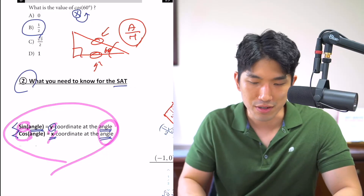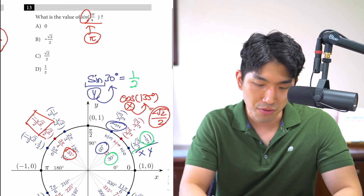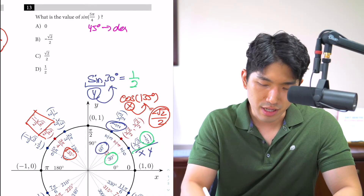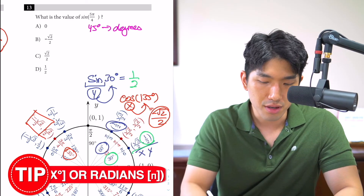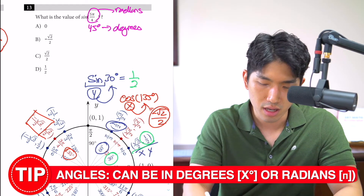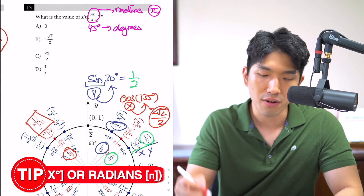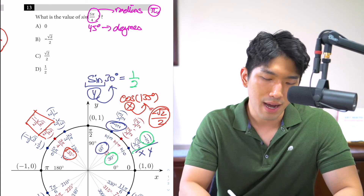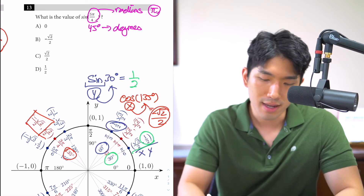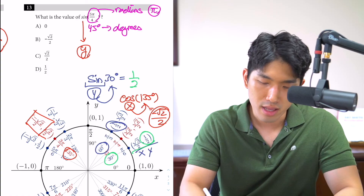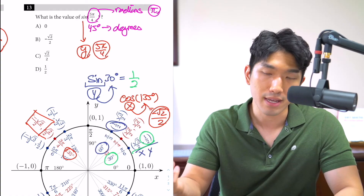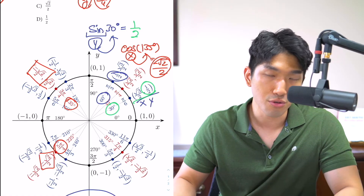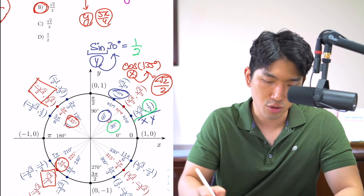Another variation of these questions uses radians instead of degrees. Radians are a measure of angle with a pi in it — it might seem complicated, but it works the same way. For sine of 5π over 4, it's asking us to find the Y value when the angle is 5π over 4 radians. Going to the unit circle chart, 5π over 4 is located here. The Y value is negative root 2 over 2, which means the answer is choice B.